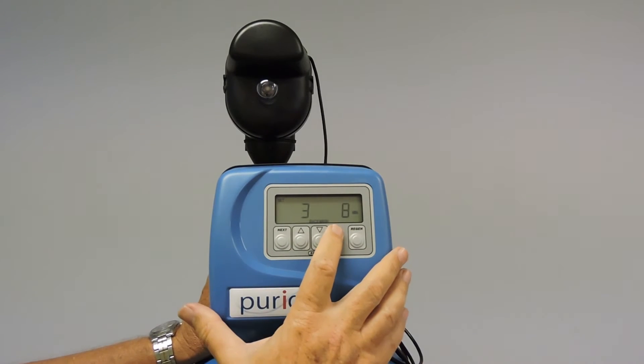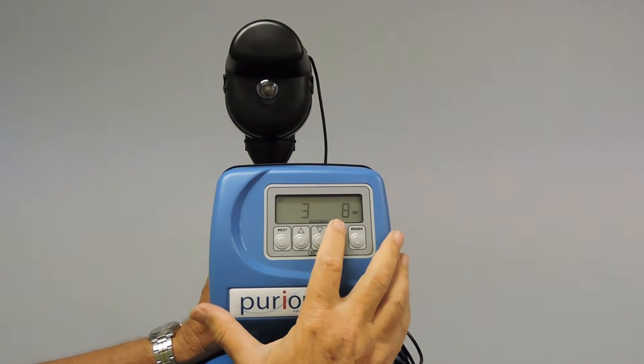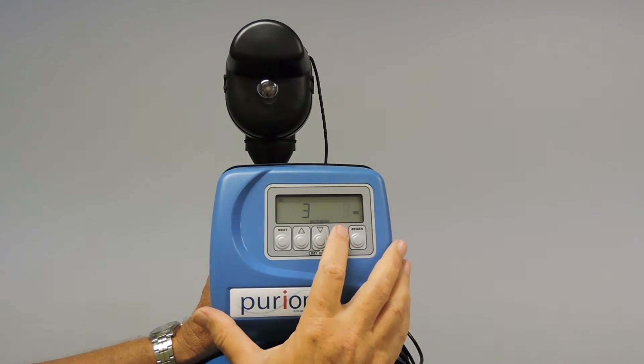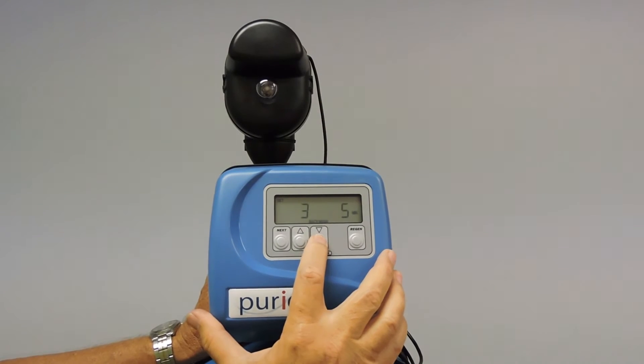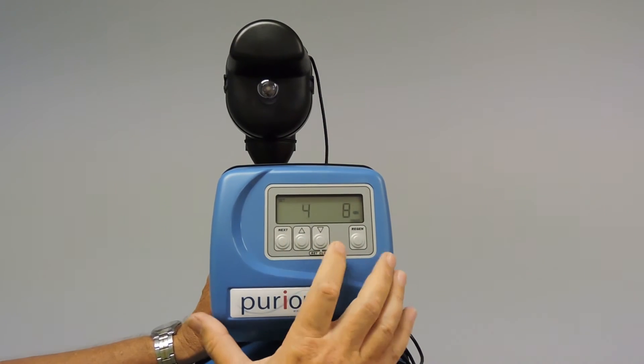Accept. Third step is our second backwash. And we use half the flow rate of the first backwash to achieve this. So we want to bring this one down to four minutes. So we will down to four. Accept.